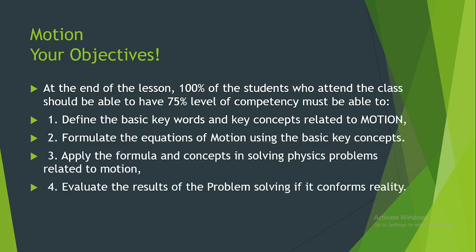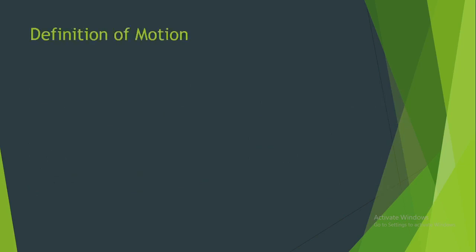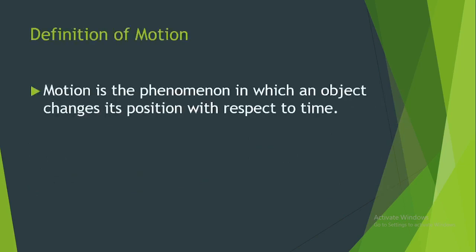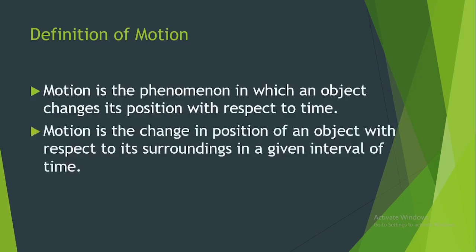Let us define motion. One definition is: motion is the phenomenon in which an object changes its position with respect to time. Motion is also defined as the change in position of an object with respect to its surroundings in a given interval of time.